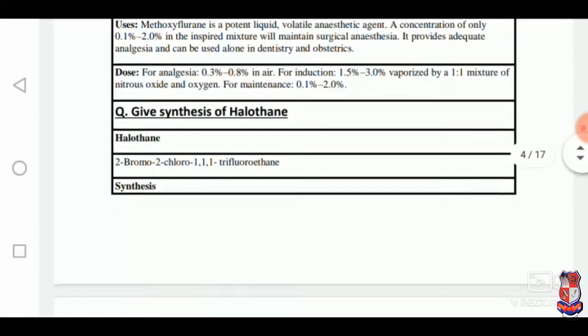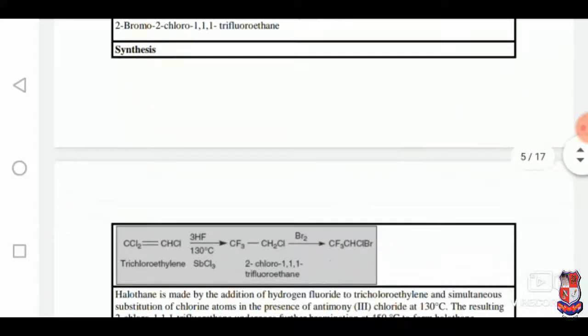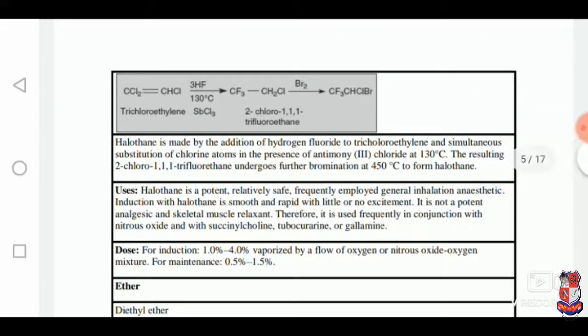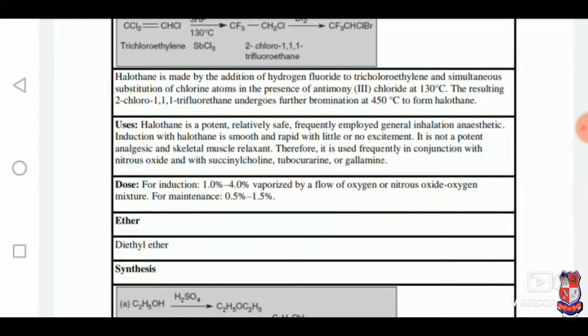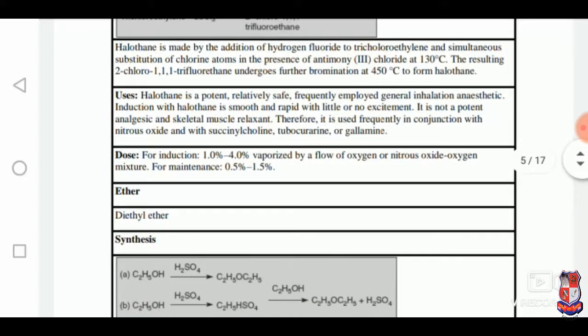Next question: give synthesis of halothane. Halothane is synthesized from trichloroethane. Uses: it is a potent and relatively safe anaesthetic and therefore it is used frequently in conjunction with nitrous oxide and with succinylcholine, tubocurarine and gallamine.